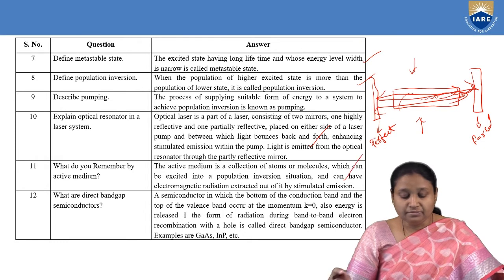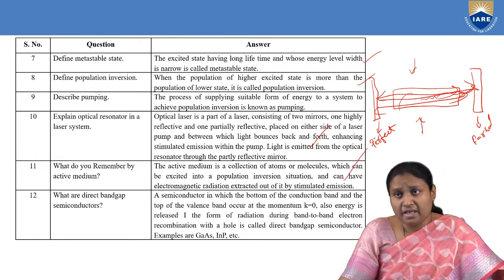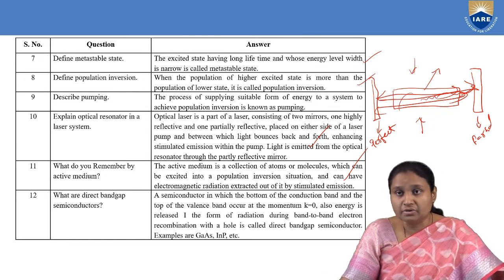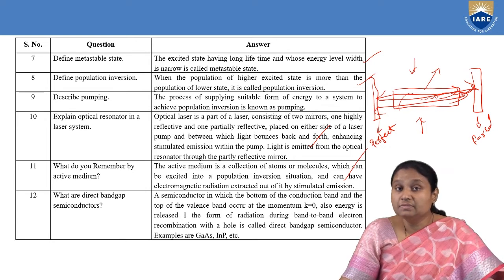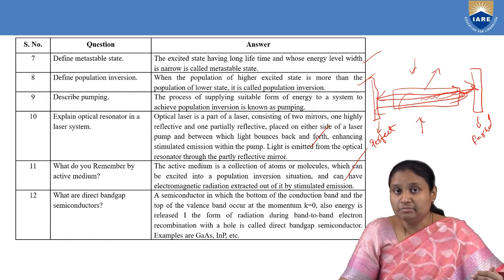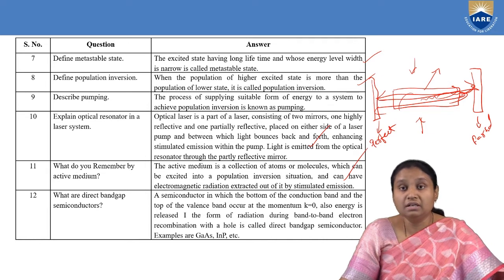What do you mean by active medium? The active medium can be in any form — it consists of atoms, molecules, particles, or electrons. It has a metastable state, which is a higher state with a long lifetime. In the metastable state, population inversion is achieved, and by the de-excitation of atoms through stimulated emission, we obtain laser light.